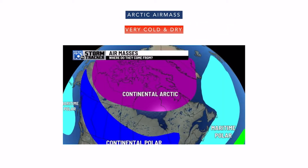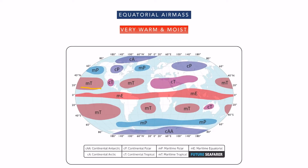The arctic air mass has extremely low temperature. The humidity is very less in winter and increases a bit in summer. This air mass is originated over the polar regions. The equatorial air mass, as the name suggests, is originated around the equator where the temperature is very high and humidity is also a lot. So this air mass is quite warm and moist.